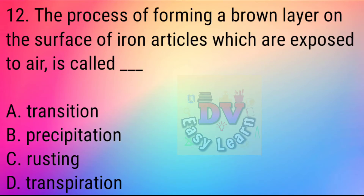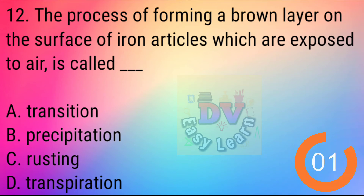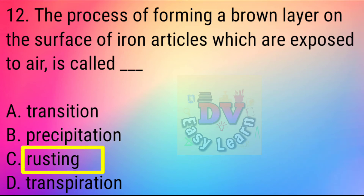Question No. 12: The process of forming a brown layer on the surface of iron particles which are exposed to air is called — Correct answer: Rusting.